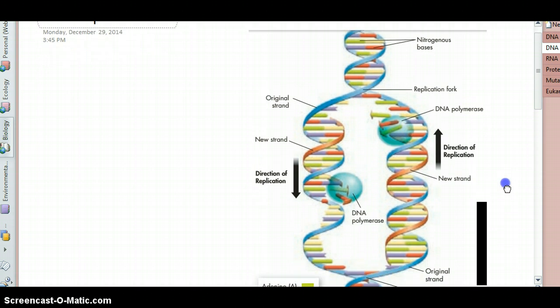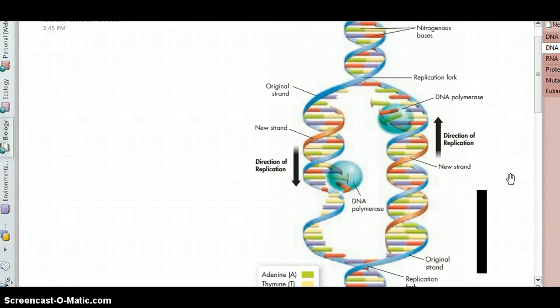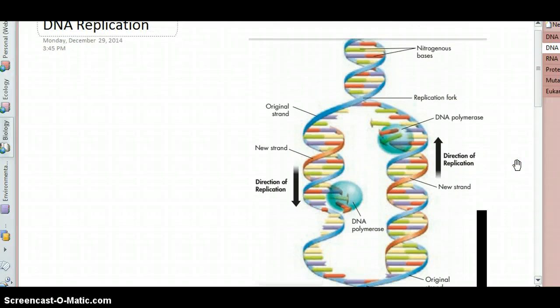All right, so here's our DNA molecule, and in order to copy it, you have to unzip it. Now, there's an enzyme involved that's not shown in this image, but it's known as helicase. Molecules with ASE endings are often enzymes, and this is the molecule that basically unzips DNA. It pulls apart the two strands, and by pulling apart the strands, it makes it possible to build up the new copies.